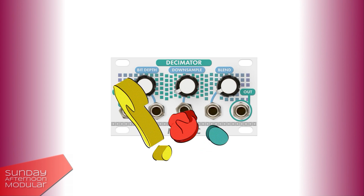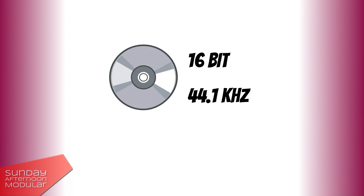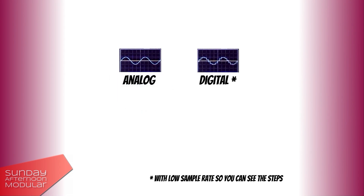But what does a BitCrusher exactly do? For this we need to understand how digital audio works. Digital audio on a CD has a resolution of 16-bit and a sample rate of 44.1 kHz. If we compare analog audio to digital audio we see that there is not a smooth line but it is stepped.